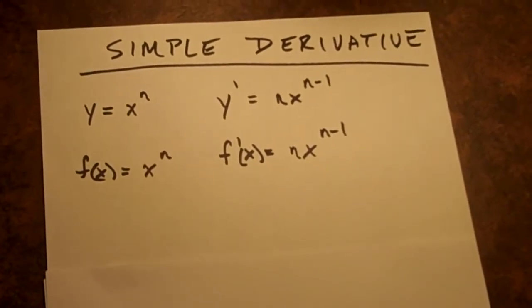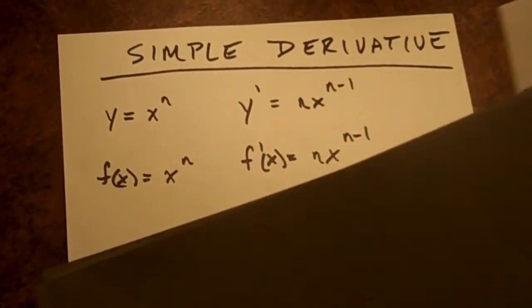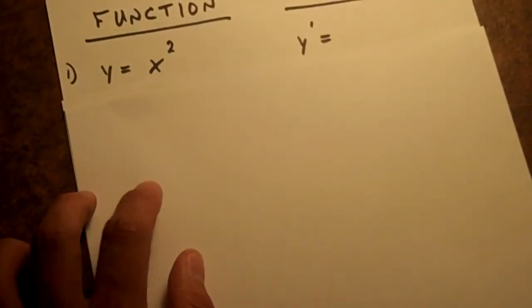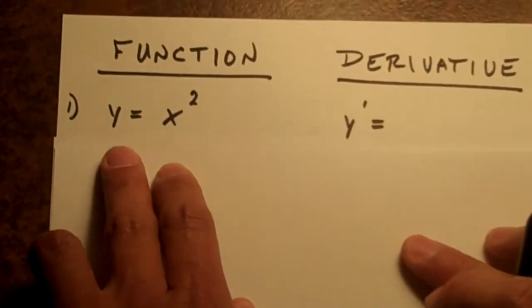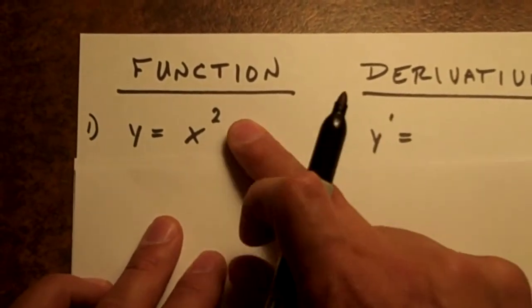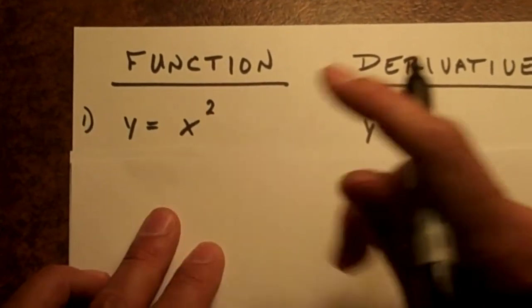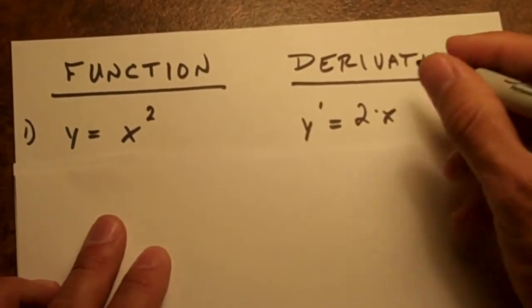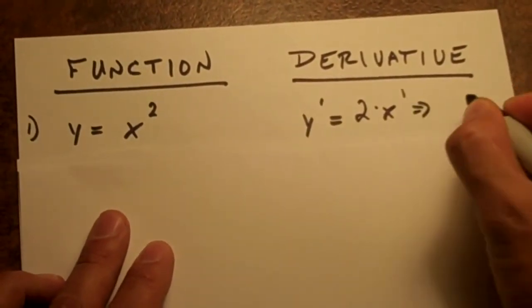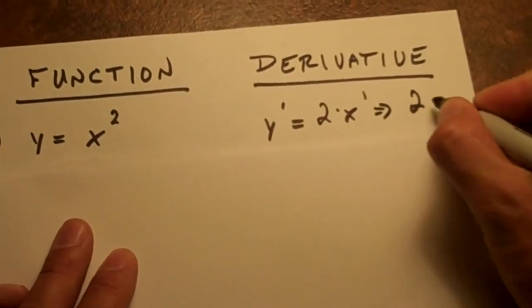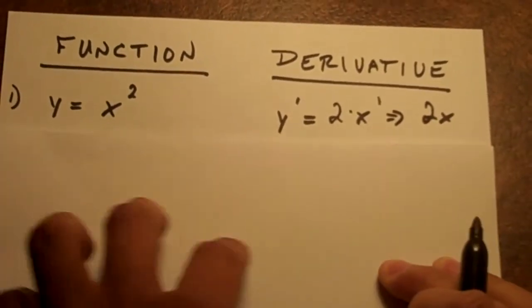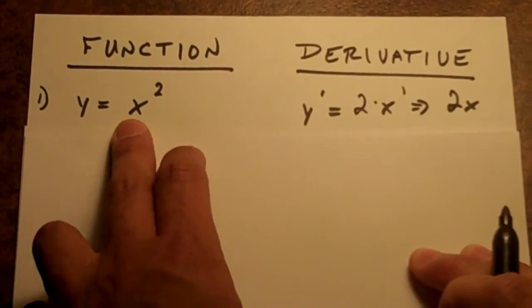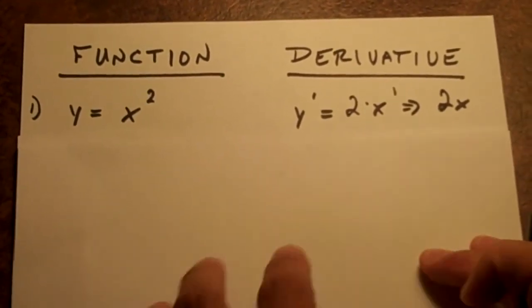Let's do a couple of examples. I'll walk you through just to kind of get your feet wet and see what's going on. If we start off with the function y equals x squared, we're going to take this number up here and multiply it out front. So 2 times x and then subtract 1 from that. So 1. We're just going to end up with 2x. Now I've just taken the derivative of this function, y equals x squared and it is 2x.